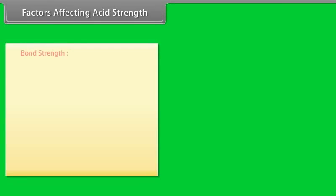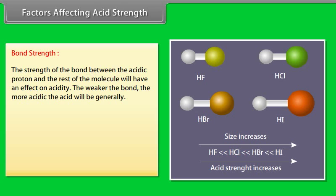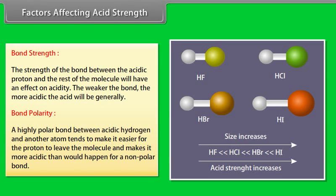Factors affecting acid strength — bond strength: The strength of the bond between the acidic proton and the rest of the molecule affects acidity. The weaker the bond, the more acidic the acid will generally be. Bond polarity: A highly polar bond between the acidic hydrogen and another atom makes it easier for the proton to leave the molecule, making it more acidic.